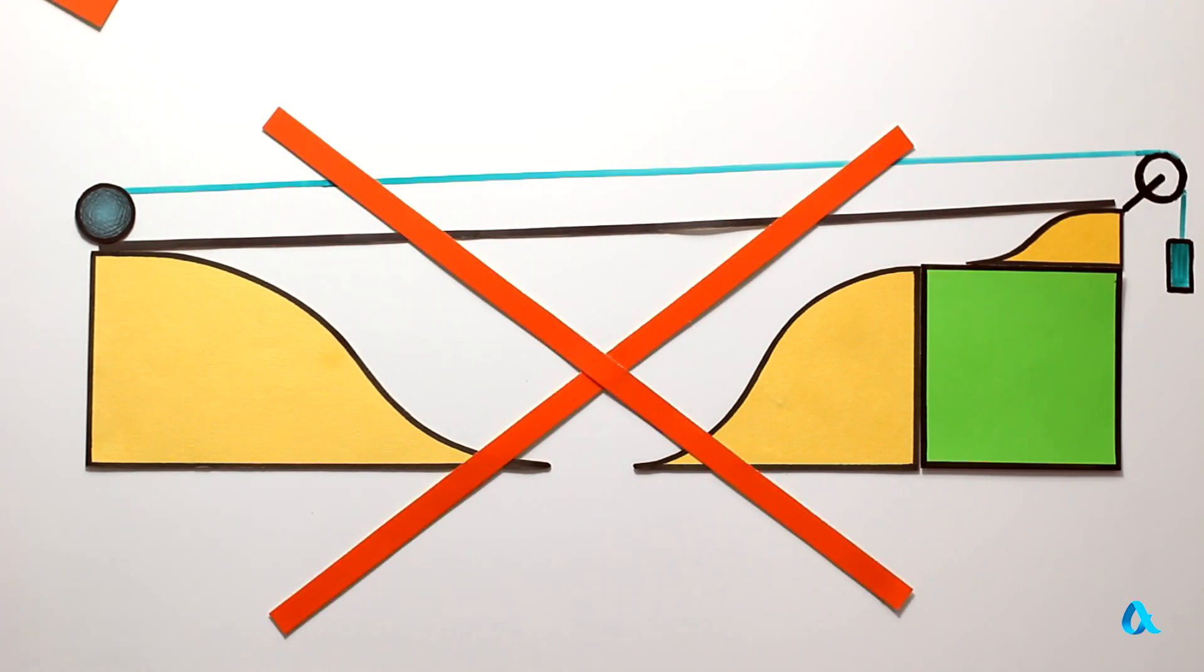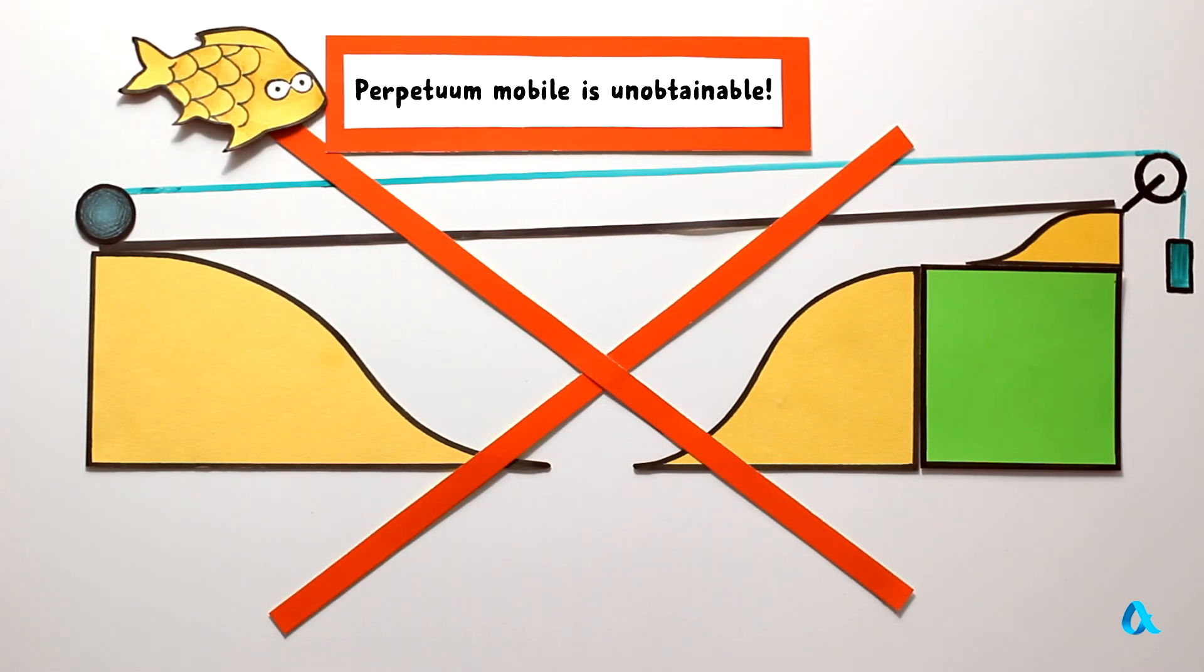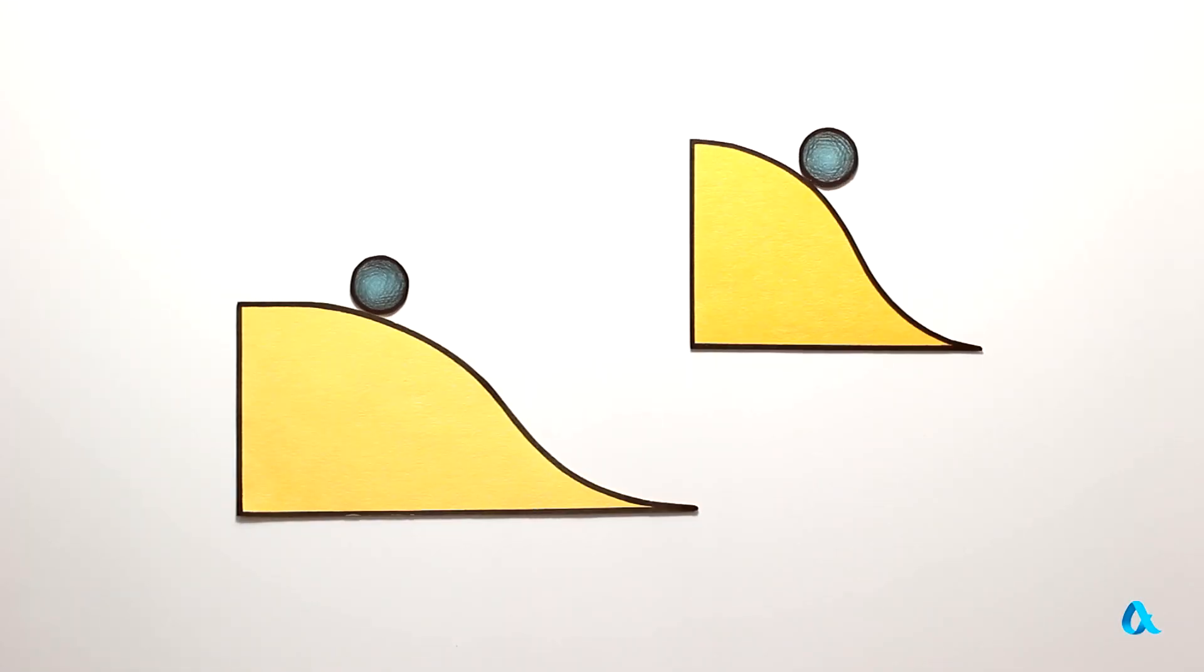But perpetuum mobile is unobtainable. So we have proved that when descending slides of the same height, the ball acquires equal speed.